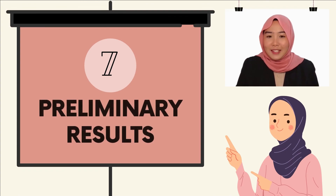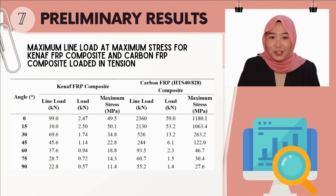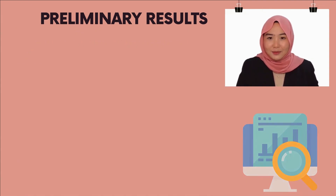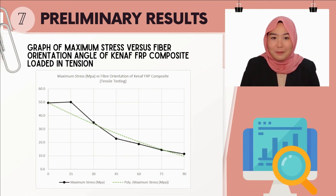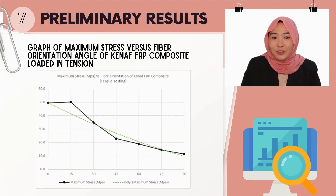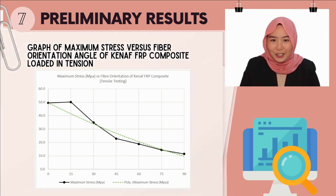Now, let me present the preliminary results. The table shows the maximum line load and maximum stress for kernel fiber reinforced polymer composite and carbon fiber reinforced polymer composite loaded in tension. This graph demonstrates the relationship between the maximum stress and fiber orientation angle of kernel fiber reinforced polymer composite loaded in tensile. From the polynomial line on the graph, we can see that the highest maximum stress is obtained at 0 degree and the lowest is obtained at 90 degree.